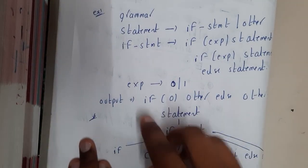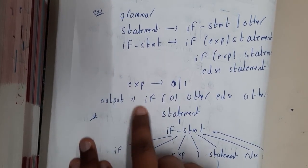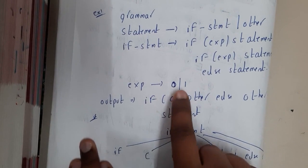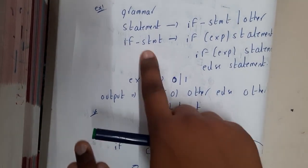So if you take a small example, expression is equal to zero. Output implies if open braces zero close braces other, else other. For the statement, initially let us go to if-statement.